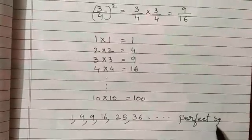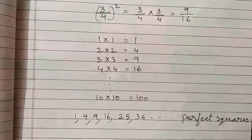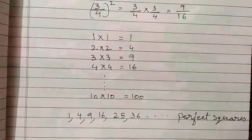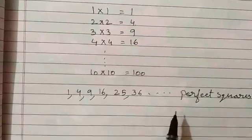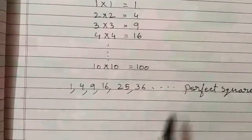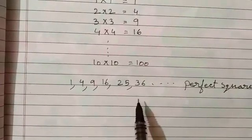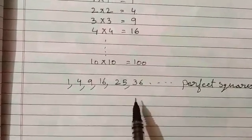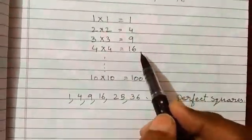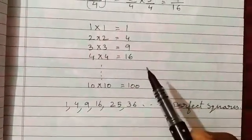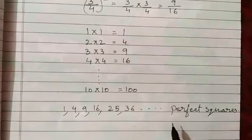Perfect squares. What are perfect squares? They are natural numbers which are squares of some other natural numbers. All natural numbers are not perfect squares. Only 1, 4, 9, 16, etc. — these numbers are perfect squares.